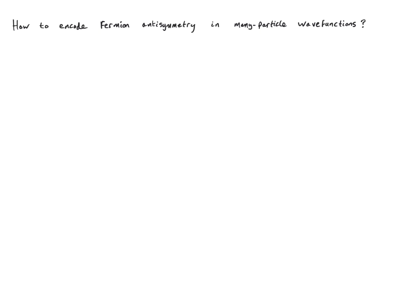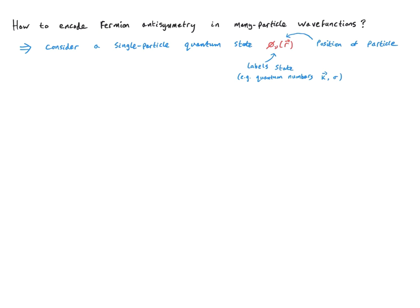So, how do we encode the fermion antisymmetry in our many-particle wave functions? First of all, let's consider a single particle quantum state, phi. We label the specific state with the index nu. The label nu distinguishes different single particle quantum states. It could, for example, be one of the quantum numbers, such as the momentum k or the spin sigma. And the position of the particle in this orbital will be denoted by r.